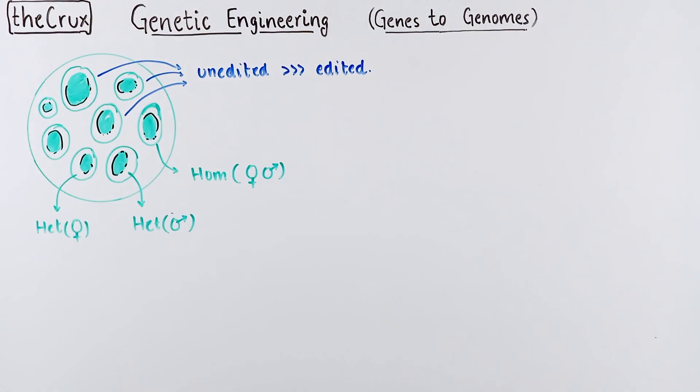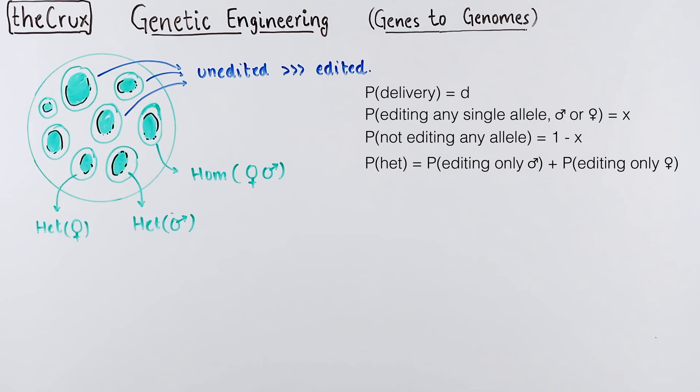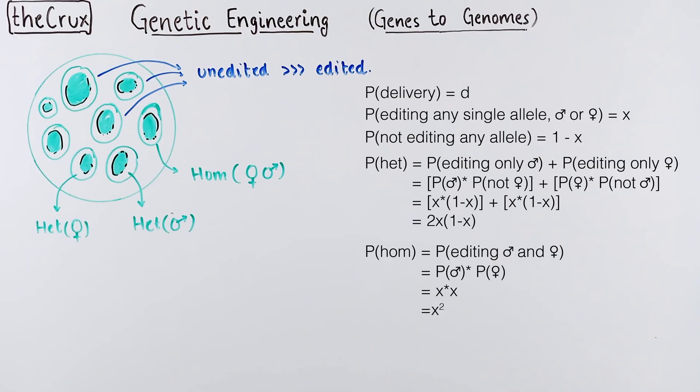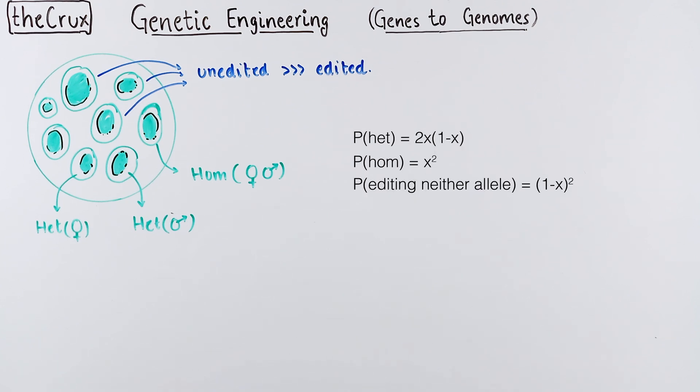And let's do some quick math to better understand this. The first variable is the probability that a plasmid or an RNP is actually delivered to a cell. Let's call this probability D. After delivery, there is a probability that any single target allele is edited by the Cas9. The chances of that, let's call it X. Then the probability of not editing the other allele is simply 1 minus X. If you were to calculate the probability of all HETs, meaning that any allele can be edited, it would look something like this, which gives you 2X times 1 minus X. The probability of two alleles being edited within a cell is simply X squared. Finally, the probability that none of the allele get edited is 1 minus X squared.